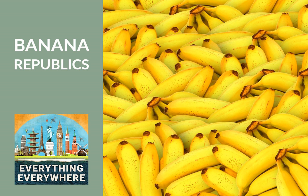Keith soon realized he could grow bananas on the land on either side of the train track, and then use the train to transport them to port. After a period of consolidation, by the end of the 19th century, only a handful of companies dominated the entire fruit business. In 1899, the United Fruit Company was created with a merger of Keith's Central American operations and Preston's Caribbean operations. The United Fruit Company controlled over 80% of the banana business in the United States after buying up over a dozen of their competitors.